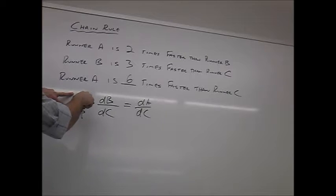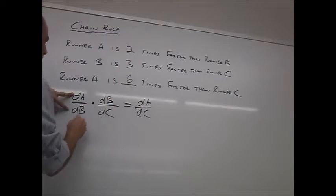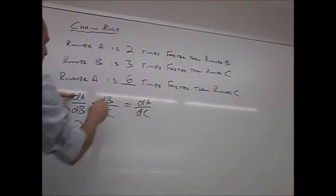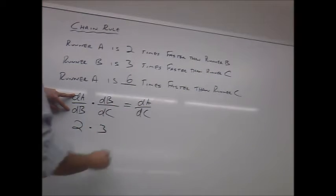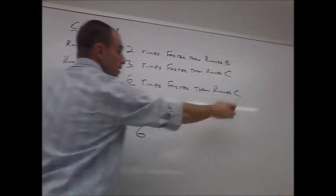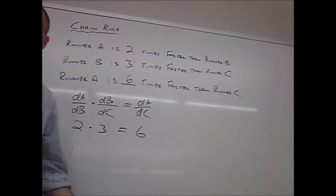This right here, the A compared to B was a two. B compared to C was a three. So, therefore, we multiply them together and we get six, which was A compared to C. Easy enough?